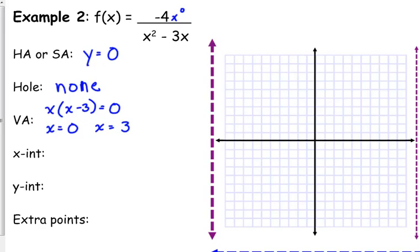x-intercept, we set the numerator equal to zero. Well, the numerator is negative four. Does negative four equal zero? No, we have no x-intercept. That happens sometimes. Not always, but sometimes.